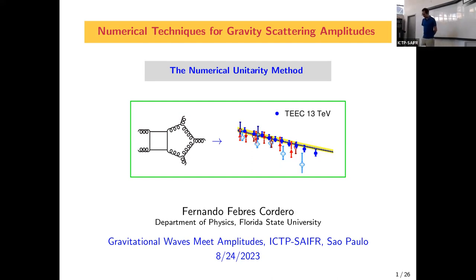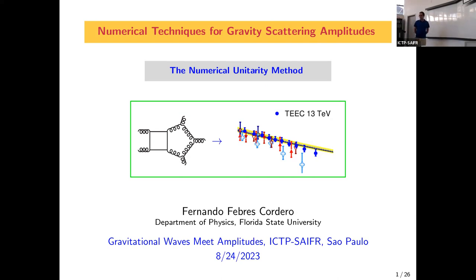It is a tremendous pleasure to have a talk telling us about numerical unitarity in gravity scattering amplitudes. Let me start by thanking the Institute and all of you for coming here. We heard from Manfred on Monday about a calculation we recently did about the calculation of post-Newtonian corrections to the conservative potential for black holes with spin.